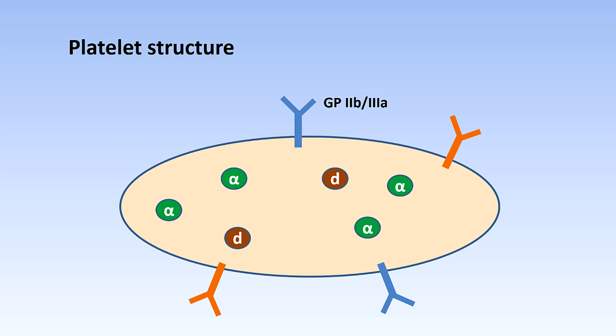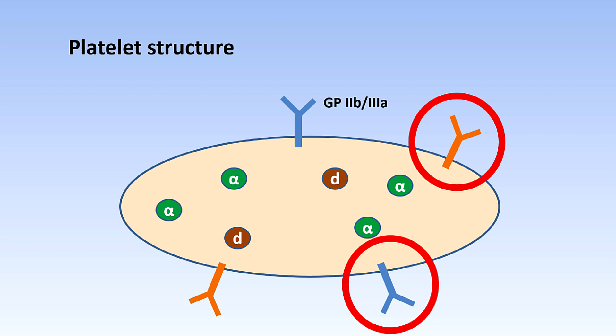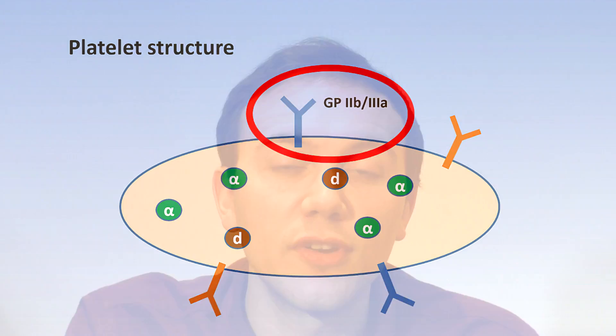Now let's take a look at the structure of a platelet. You'll see platelets drawn in different ways, either an oval shape or an octopus with little legs. The important thing to know is that when platelets are activated they change shape and increase their surface area. The surface of the platelet is covered with glycoproteins which allow it to stick to things and also help to activate the platelet. A particularly important one is glycoprotein 2b3a, which is quite important for understanding how a platelet works and is also quite an interesting target for some of the new antiplatelet drugs.